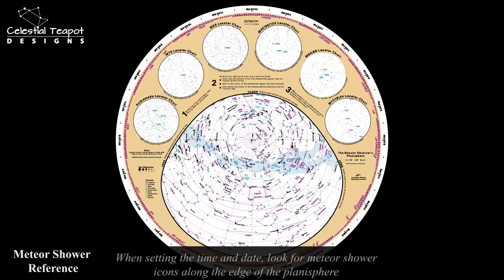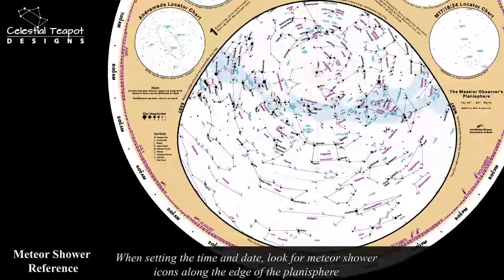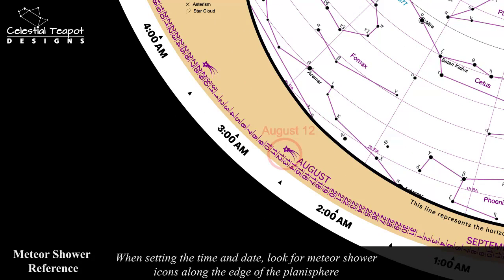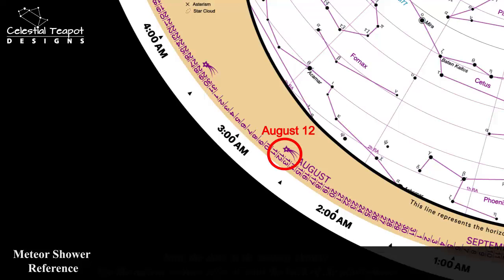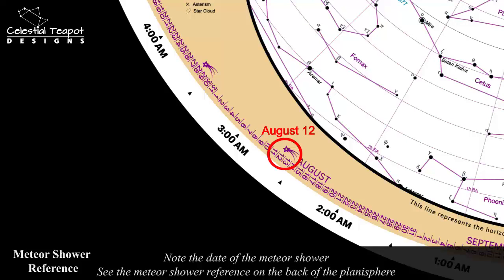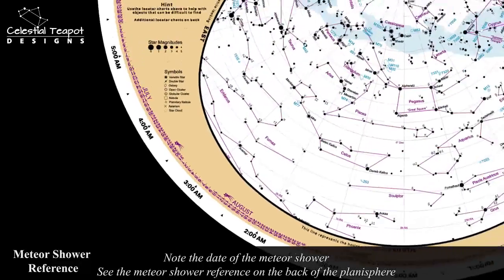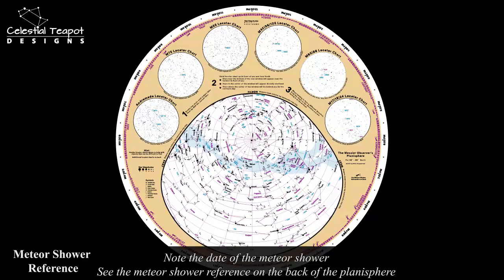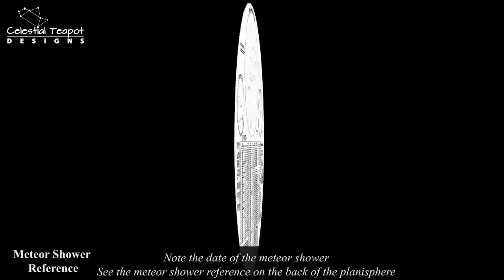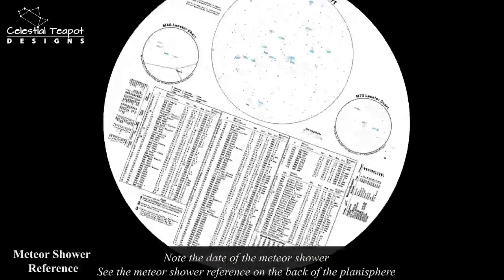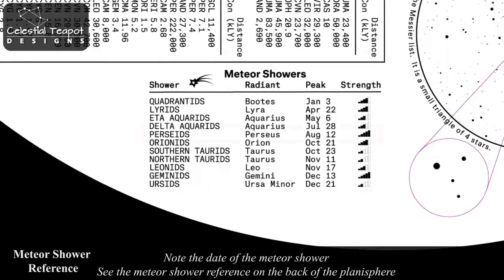When setting the time and date on the planisphere, be sure to look for meteor shower icons along the edge of the planisphere. These indicate that a meteor shower peaks around this date. Make note of the date, then turn the planisphere over to refer to the meteor shower reference on the back. This example shows the Perseids, which peak around August 12th of each year and are a relatively strong meteor shower.